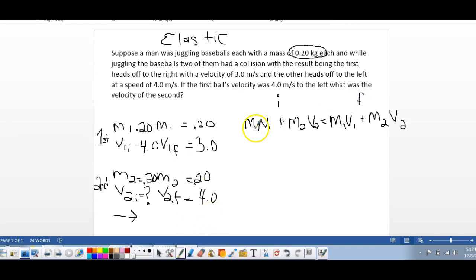So then we just plug our numbers in. We have the first one is 0.2, its initial velocity is negative 4, and we're going to add the same thing, 0.2, and that's going to be, actually we don't know this one, so we'll leave it V.